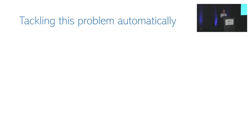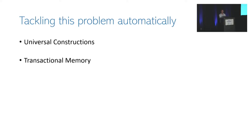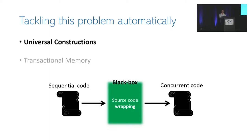Over the years, two classes of automatic methods were designed to create concurrent code from sequential code automatically: universal construction systems and transactional memory. Universal construction systems take the sequential input code as a black box and convert it into a concurrent variation without doing any instrumentation. In most cases, they output concurrent code that works on a copy of the data structure or part of it.